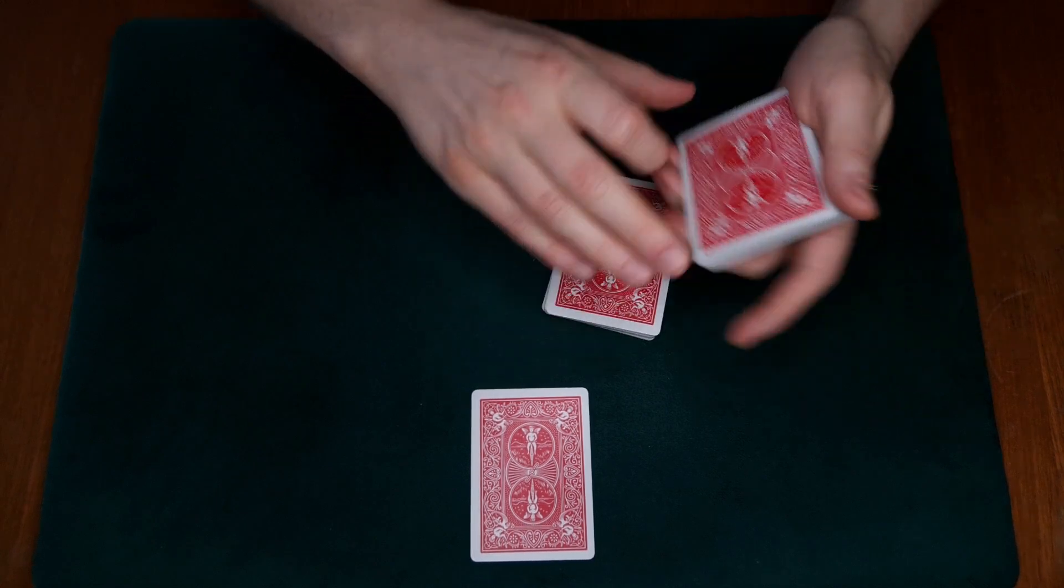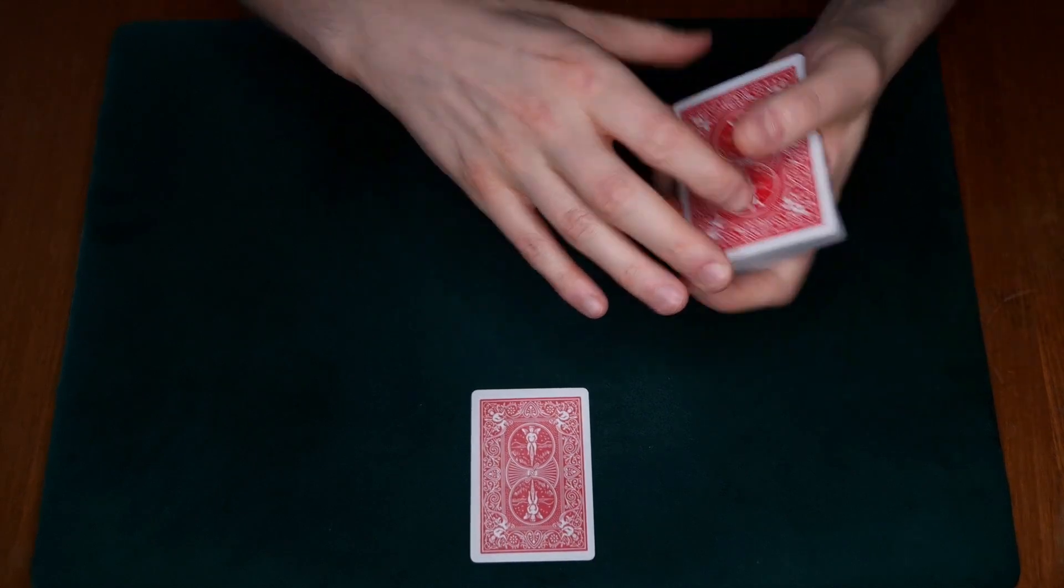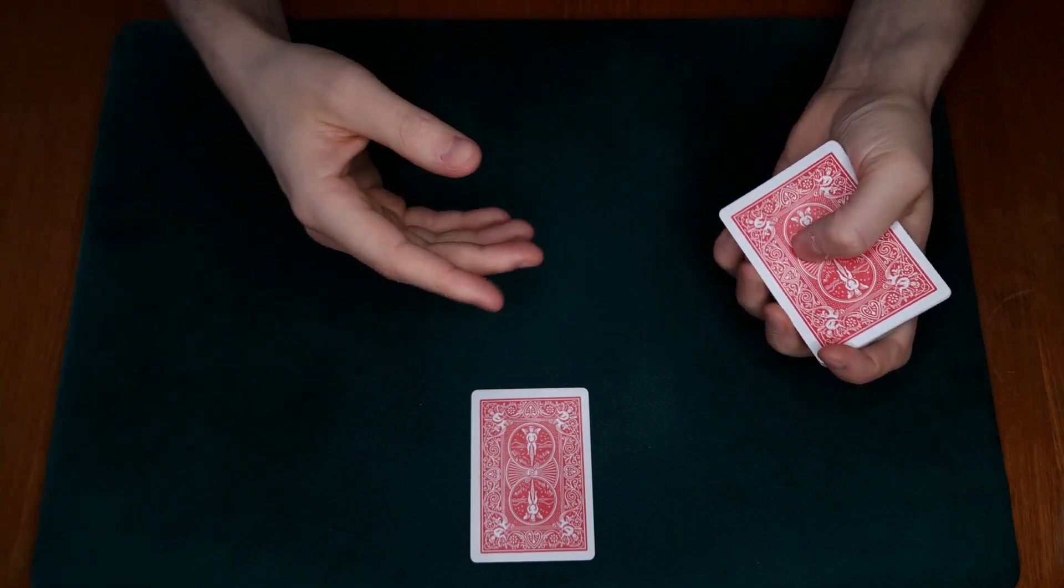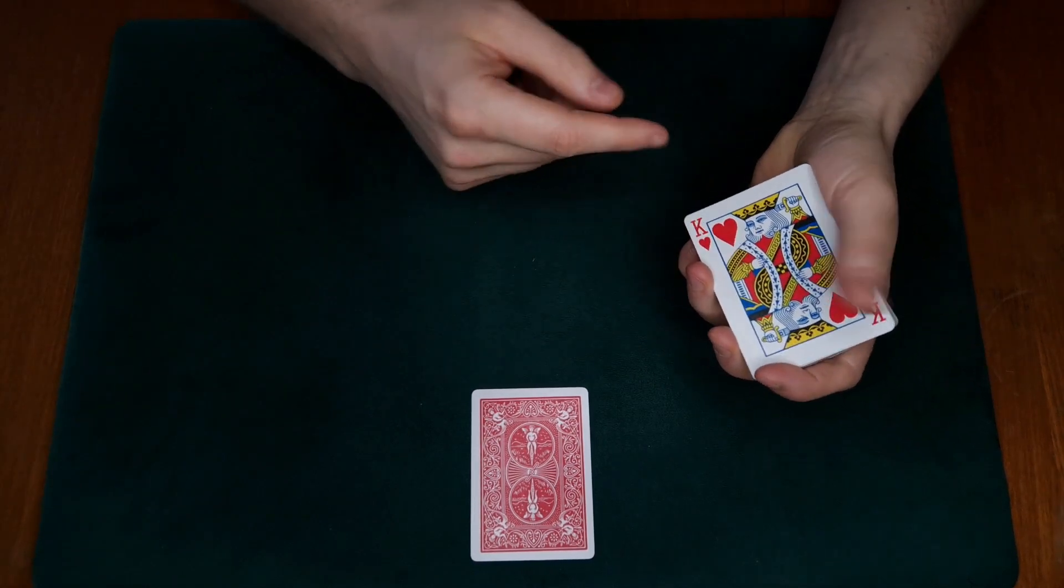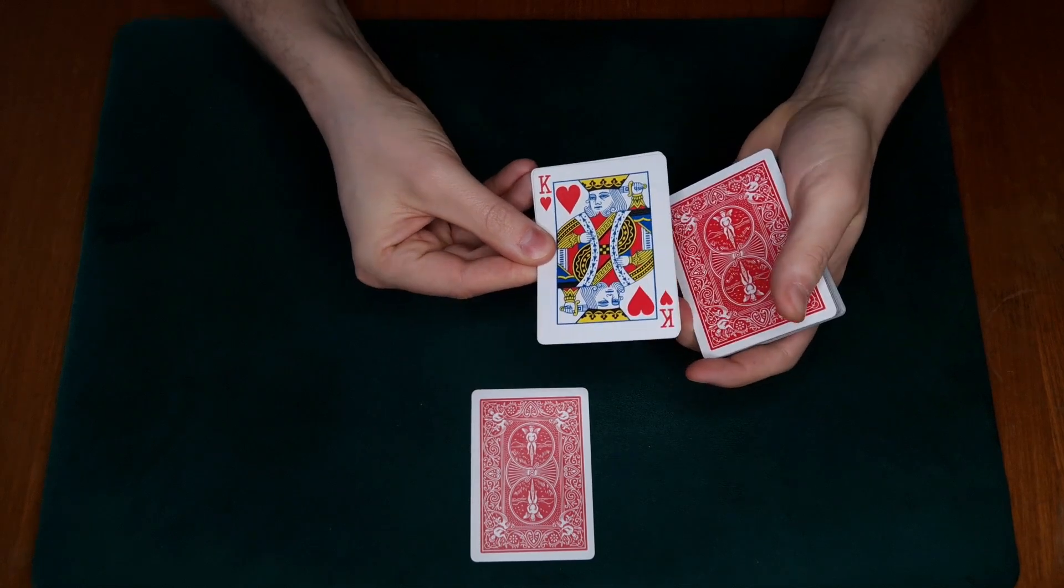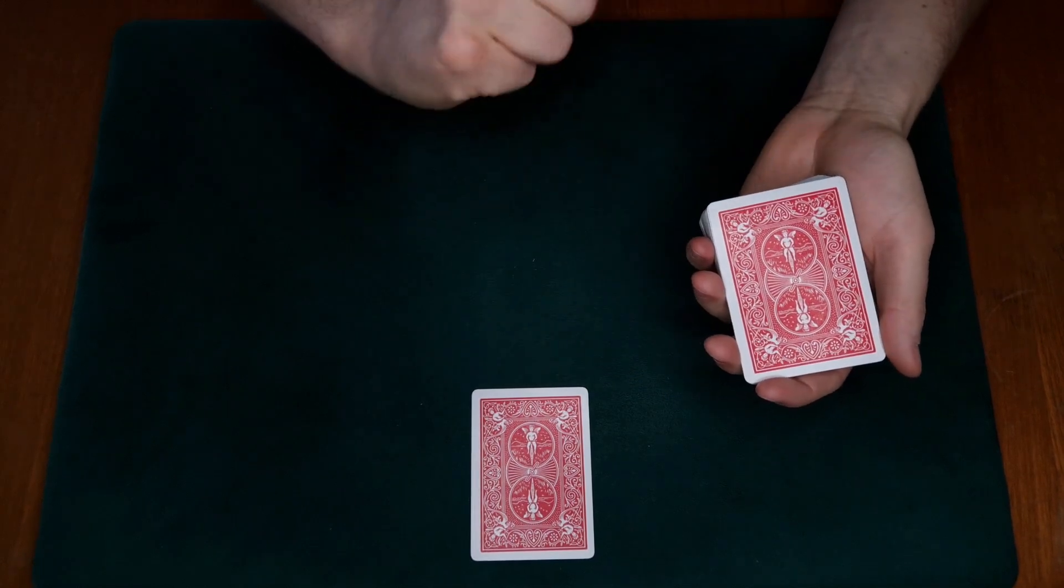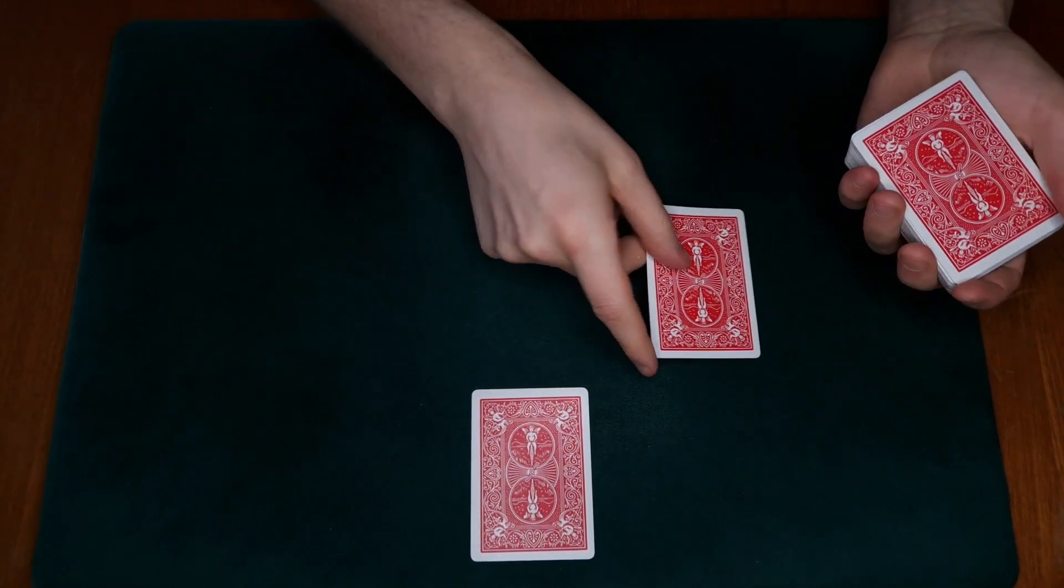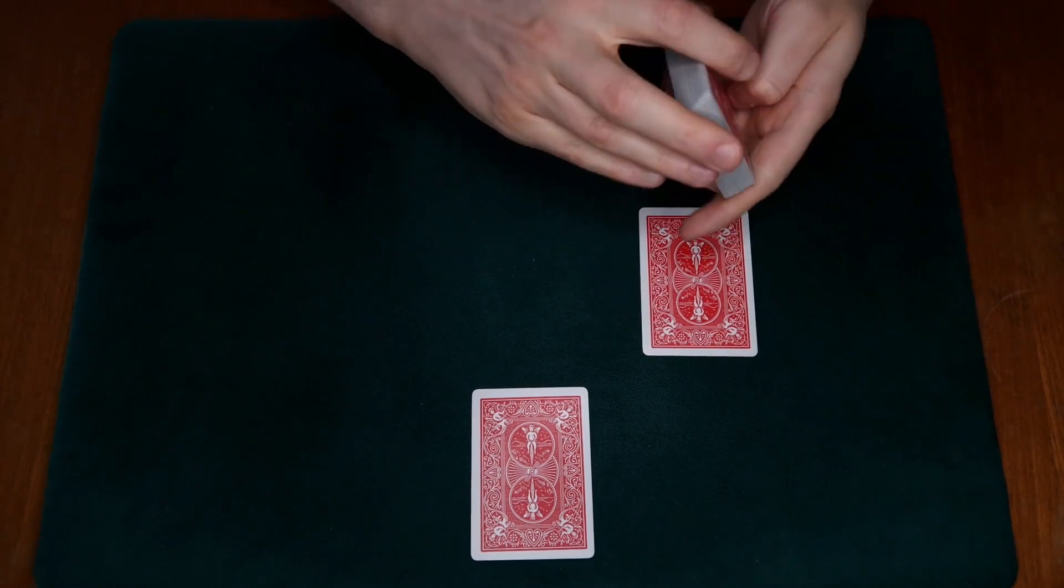For now I'm simply going to cut the cards a couple of times and we're going to look at the card that happens to end up on the top of the pack. In this case it happens to be the King of Hearts. That tells me that your card is a King - tells me the value of your card.